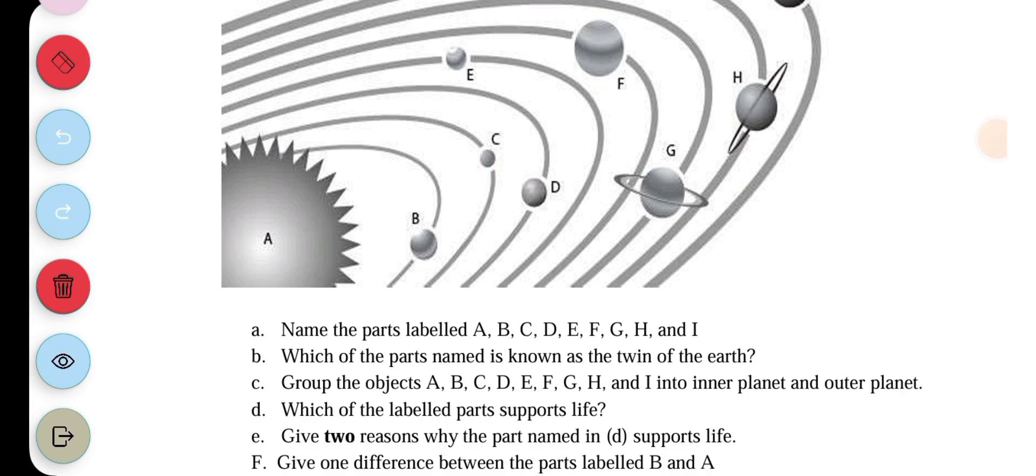Then question F: Give one difference between the parts labelled B and A. So B is made up of metals, but A is made up of burning gas.